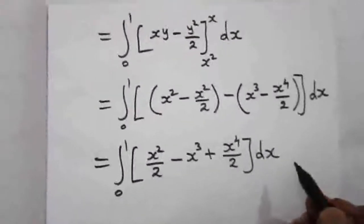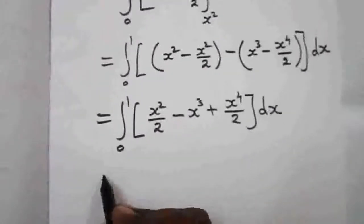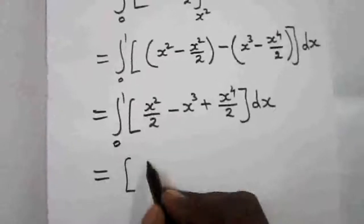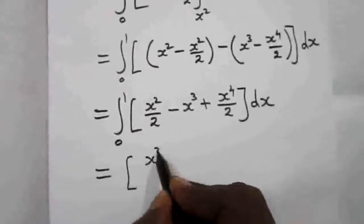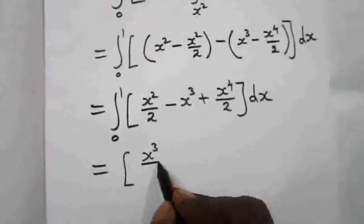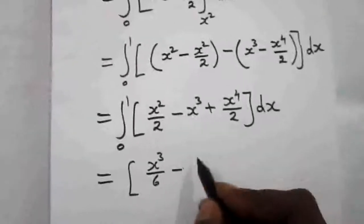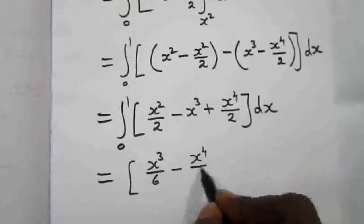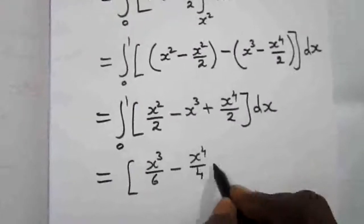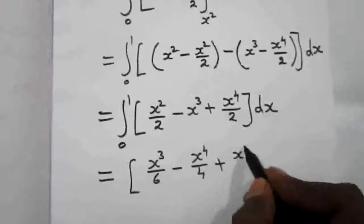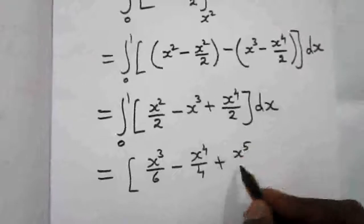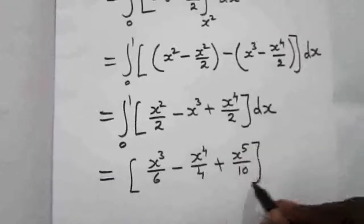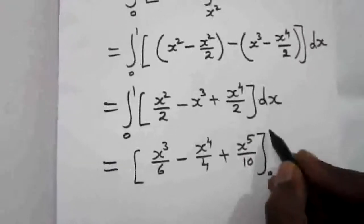Now integrating with respect to x: the integral of x squared gives x cubed over 3 (coefficient gives 1/6), minus x cubed integrates to x to the 4th over 4, plus x to the 4th over 2 integrates to x to the 5th over 5 (giving 1/10). The limit is 0 to 1.